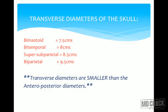MCQ tip: if asked which is the smallest diameter of the fetal skull and options are given, use the clue that whichever option is a transverse diameter, that would be the smallest. So even if you don't remember exact measurements, select the transverse diameter as it will be the least or smallest one.